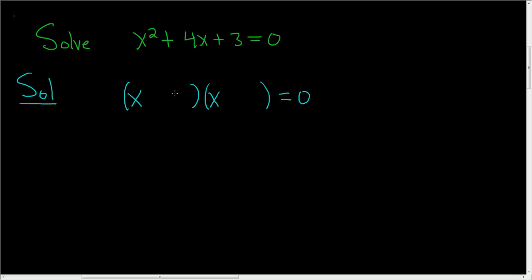And the reason is that x times x is going to give us x squared. So here's the logic to finish. We need two numbers that multiply to 3 but add to 4x. So the easiest numbers that I can think of that multiply to 3 are 1 and 3. In fact, those are the only numbers.